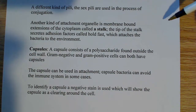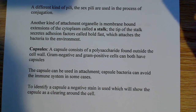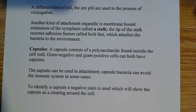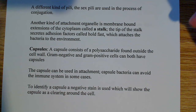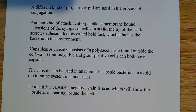The capsule can be used in attachment. Capsule bacteria can avoid the immune system because the capsule can shield the bacteria from phagocytosis — from being broken down in the body — which can have a really big effect on its ability to act as a pathogen. Sometimes the capsule form of a bacteria is pathogenic, while the non-encapsulated form is not pathogenic. So the capsule can really make a big difference in terms of whether or not the organism is dangerous.